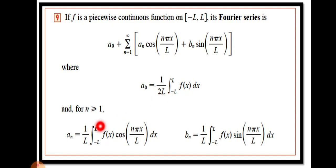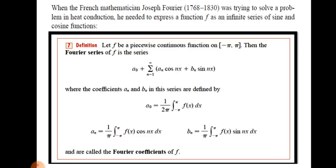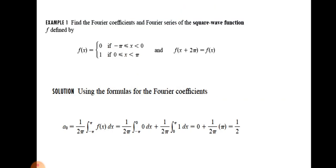The Fourier coefficients a₀, aₙ, and bₙ are defined by specific formulas. If the interval is from negative π to π, that is a special case of this general rule, and you can find the simplified formulas for that special case.